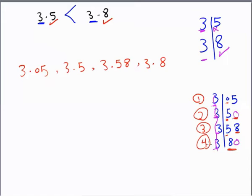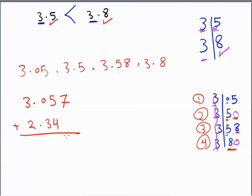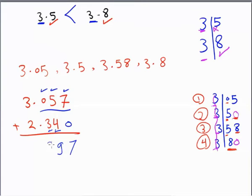Now we will study adding and subtracting decimal numbers. For example: 3.057 plus 2.34. Like comparing, you must make the two decimal numbers equal in the number of decimal digits. Here there are three decimal digits, so I add zero to 2.34 to make it 2.340. Then: 7 plus 0 is 7, 5 plus 4 is 9, 0 plus 3 is 3, and 3 plus 2 equals 5.